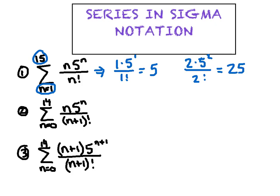A lot of times you don't have to do much more work than that. I'm going to test the other ones and see if we can create a match. On the second series, the low number says start with n equals zero. Substituting zero for all the n's: zero plus one is one factorial, so the numerator is zero times one, which is zero, and zero divided by anything is zero. The first term in the second series is zero, which does not match the five, so we instantly know the first and second series are not equivalent.